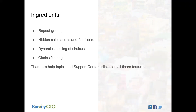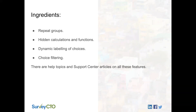We also inquire about children — for each child in the household we ask whether their parents are alive and living in the household, and we try to match each child with the mother and father living in the household. To achieve this, we'll make use of the following features in SurveyCTO: repeat groups, hidden calculations and functions, SurveyCTO's feature to dynamically label choices, and choice filtering. All of these topics are well covered in help topics and support center articles.